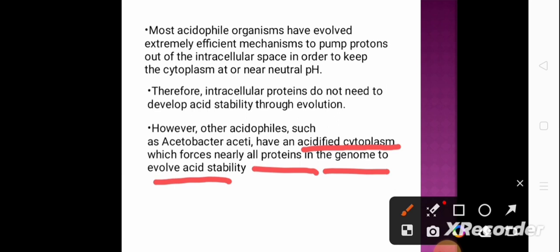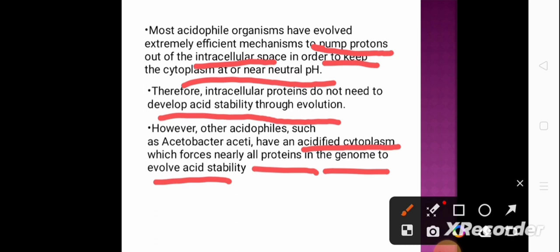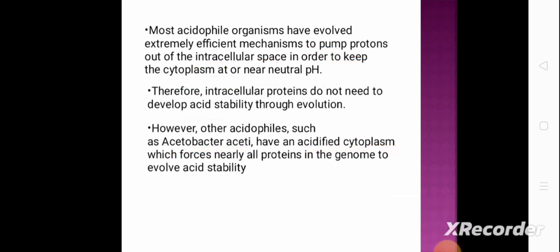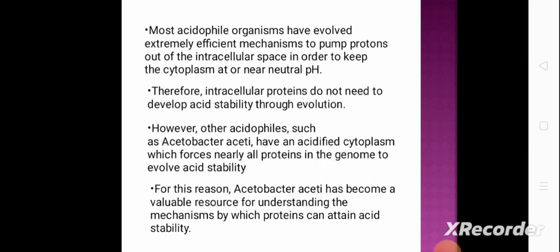So, acidophiles that pump protons out of the intracellular space keep their cytoplasm at near neutral pH and do not need to evolve acid stability. But other acidophiles such as Acetobacter aceti have an acidified cytoplasm, forcing nearly all proteins to evolve acid stability. For this reason, Acetobacter aceti has become a valuable resource for understanding the mechanism by which proteins can attain acid stability.